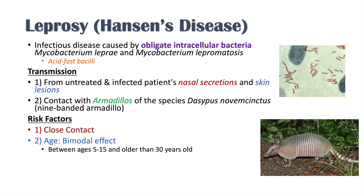These high-risk age groups include ages between 5 and 15 and older than 30 years of age, so anybody very young and anybody in late teens and 20s are at lower risk. The third risk factor is genetics — variants in the NOD2 gene, which is involved in innate immunity, have been shown to increase the risk of contracting leprosy.